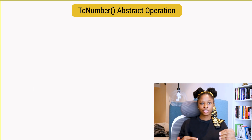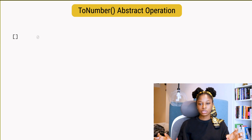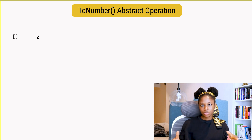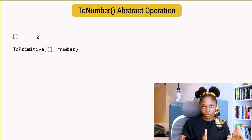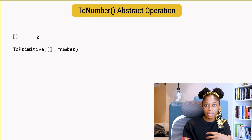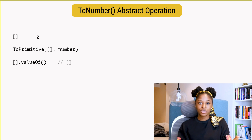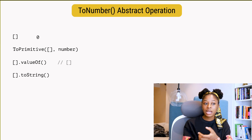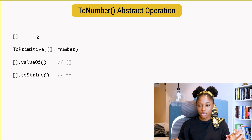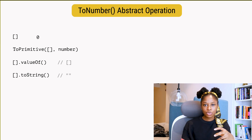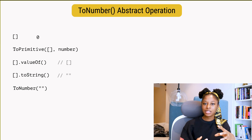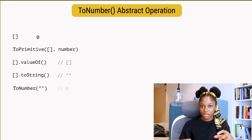Let's see how the ToNumber abstract operation handles arrays. For example, an empty array when coerced to a number returns zero. First, the empty array needs to be converted to its primitive equivalent. The ToPrimitive abstract operation gets involved and receives number as the hint, then calls the valueOf method first. valueOf basically just returns itself, so it calls toString next. When an empty array is converted to a string, it returns an empty string. Now the ToNumber abstract operation receives that empty string as an argument. Remember, the mathematical value of a numeric string literal that is empty is zero.